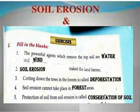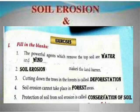The agents which cause soil erosion are water and wind. Soil erosion makes the land barren. Cutting down trees in the forest is called deforestation. Soil erosion cannot take place in forest areas. Protection of soil from soil erosion is called conservation of soil.